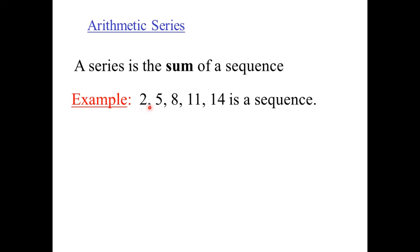is an arithmetic sequence because 5 minus 2 is 3, 8 minus 5 is 3, 11 minus 8 is 3. We have an arithmetic sequence, and this is an arithmetic series. It's just the commas have been replaced with plus signs. A series is the sum of a sequence.